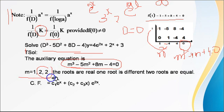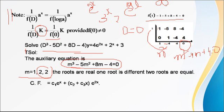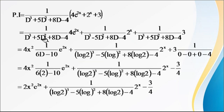Using the complementary function for these roots: CF = c₁e^x + (c₂ + c₃x)e^(2x). Now find PI = 1 upon f(D) = 1 upon (D³ − 5D² + 8D − 4) applied to Q(x), which is 4e^(2x) + 2^x + 3. Separate this into three parts: each term of Q(x) applied individually to the operator.